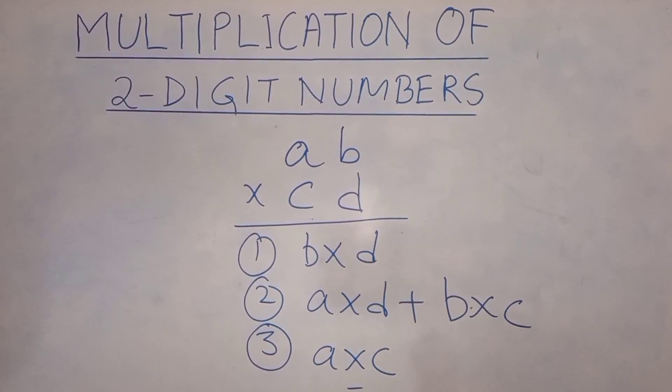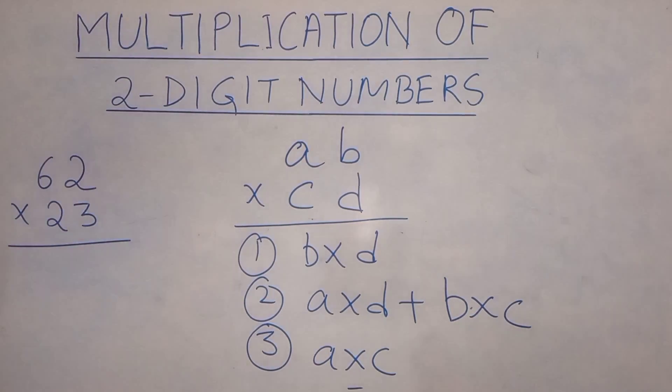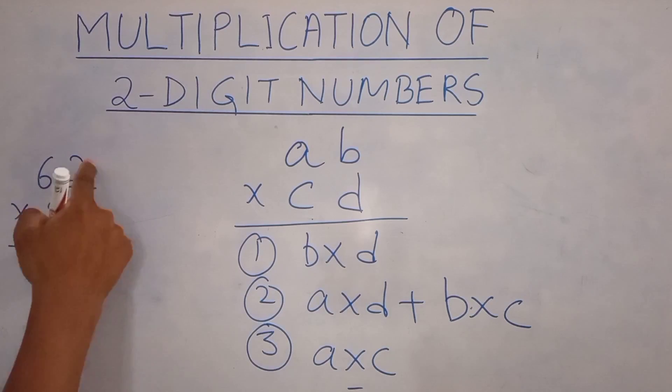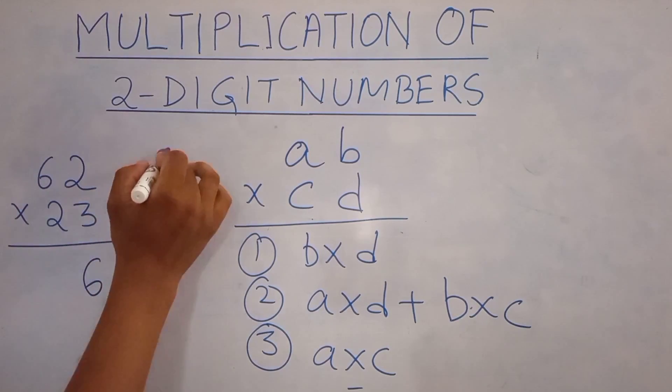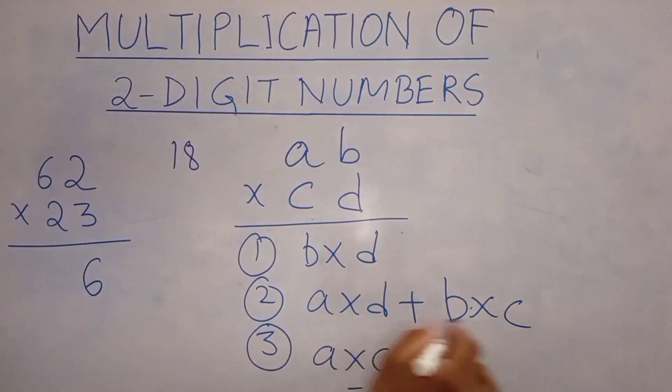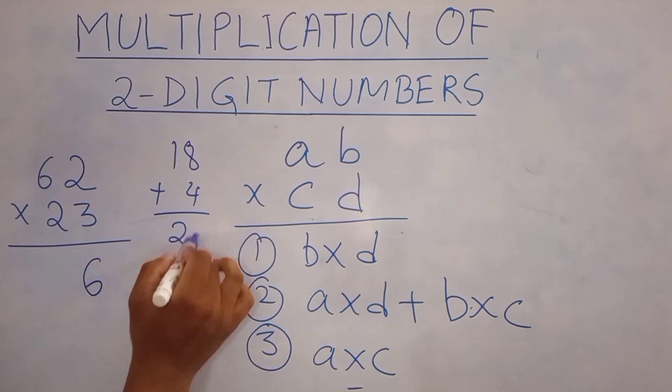So let's take another example: 62 multiplied by 23. So we'll follow the same pattern. B into D: 2 into 3 will give you 6. A into D: 6 into 3 is 18 and B into C: 2 into 2 will give you 4. 18 plus 4 is 22.